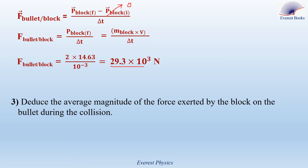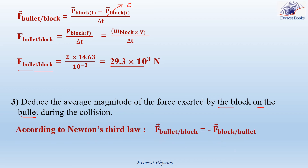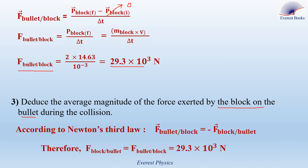Part 3: Deduce the average magnitude of the force exerted by the block on the bullet during the collision. We have the magnitude of the force exerted by the bullet on the block, and we want the force by the block on the bullet. According to Newton's third law, when block A exerts a force on block B, then simultaneously block B exerts a force on block A such that these forces have opposite directions and same magnitude. Therefore, F bullet on block equals negative F block on bullet, but they have the same magnitude, which is equal to 29.3 times 10 to the power 3 Newtons.